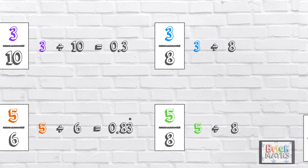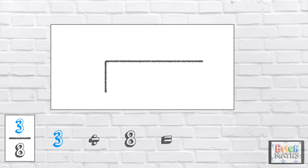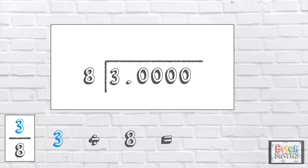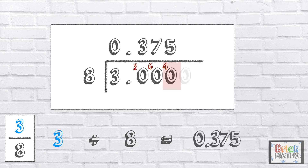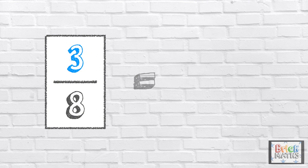Let's have a look at the next one: 3 eighths, which is 3 divided by 8. 3 is the number being divided, so 3 is the dividend. As we're dividing the number by 8, 8 is the divisor. Don't forget we need a decimal point and some zeros as placeholders. How many 8s go into 3? 0 with 3 left over. Make sure the decimal point is lined up in the same place. How many 8s go into 30? 8 times 3 is 24, so 8 goes into 30 3 times with 6 left over. How many times does 8 go into 60? 8 times 7 is 56, so 8 goes into 60 7 times with 4 left over. How many times will 8 go into 40? 8 times 5 is 40, so 8 goes into 40 5 times with no remainders. So 3 eighths is equal to 0.375.